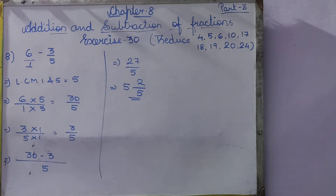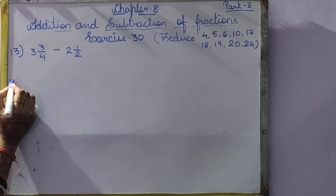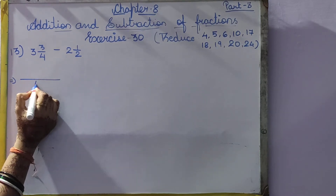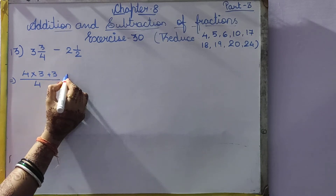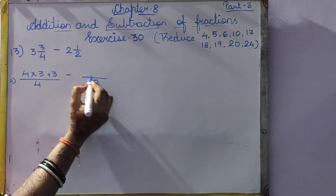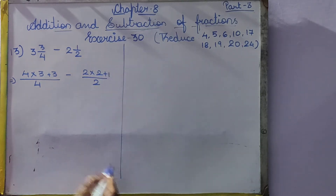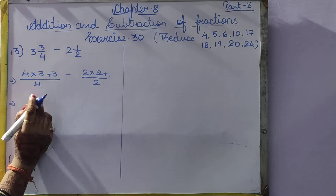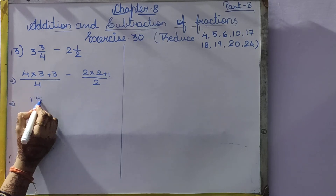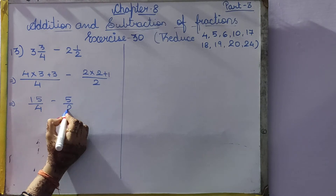Question number 13 is given as a mixed fraction. So we convert to a proper fraction. 4 and 3/4 minus 2 and 1/2: 4 into 3 plus 3 minus 2 into 2 plus 1. So 4 3's are 12, and 12 plus 3 will be 15. So 15 by 4 minus — 2 2's are 4, plus 1 gives 5 by 2.